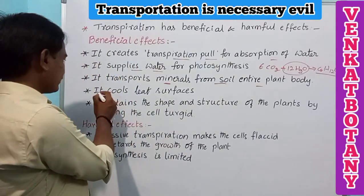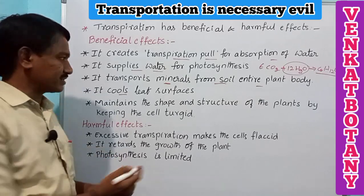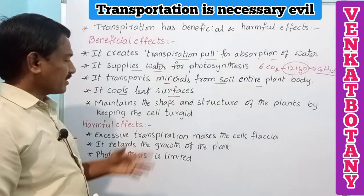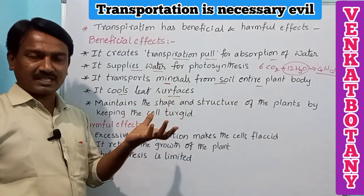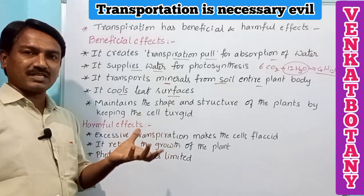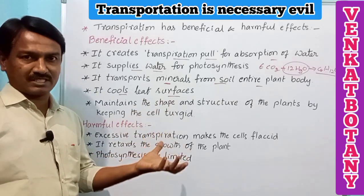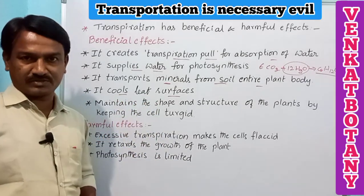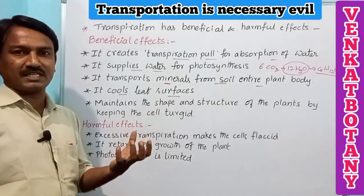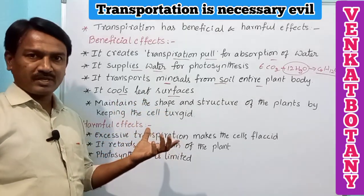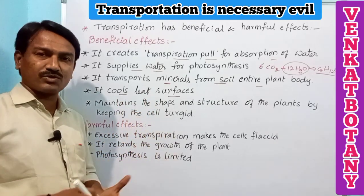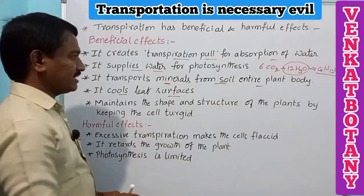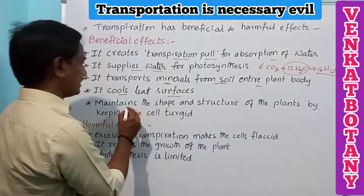Another beneficial effect is that transpiration cools the leaf and plant surfaces. Because sufficient sunlight is exposed on the plant parts, it can lead to oxidation. Transpiration prevents oxidation of plant parts, especially leaves, by providing a temperature control or cooling effect on the plant.